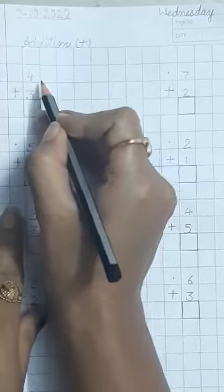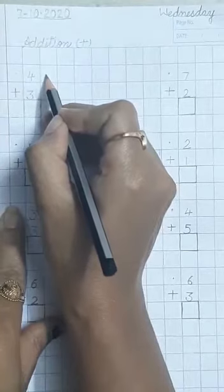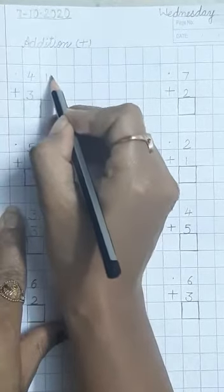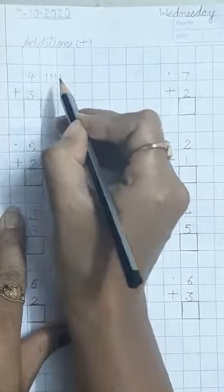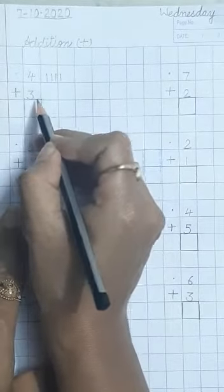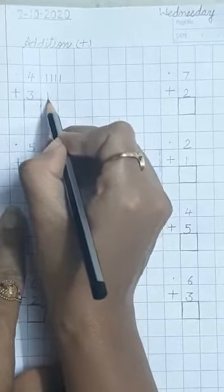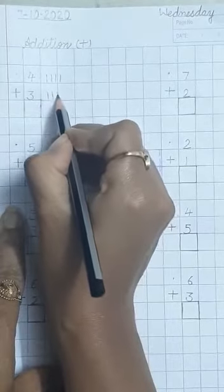Here we have number 4. So we draw here 4 lines. 1, 2, 3, 4. And here we have 3. We draw here 3 lines. 1, 2, 3.